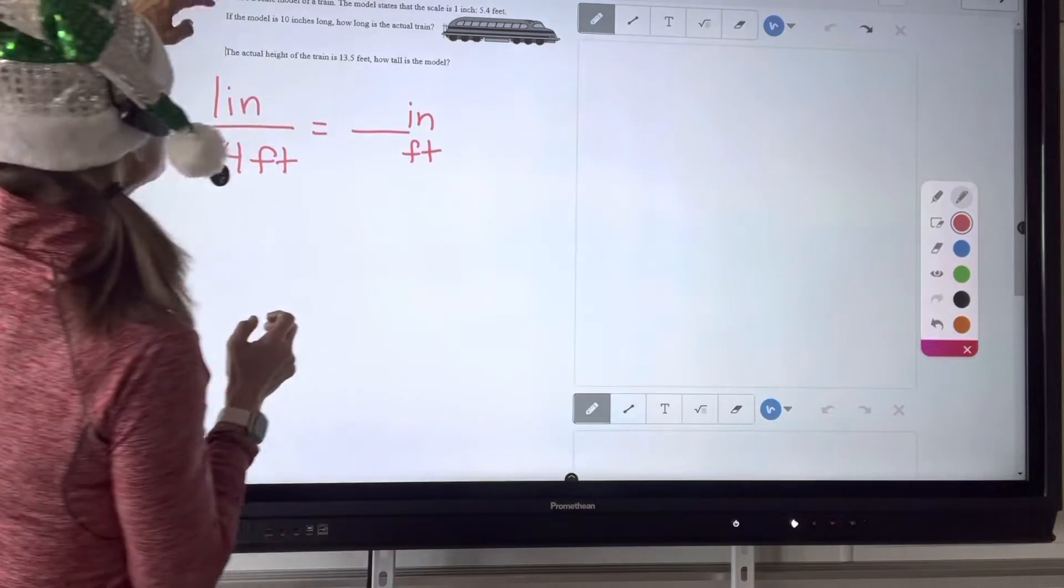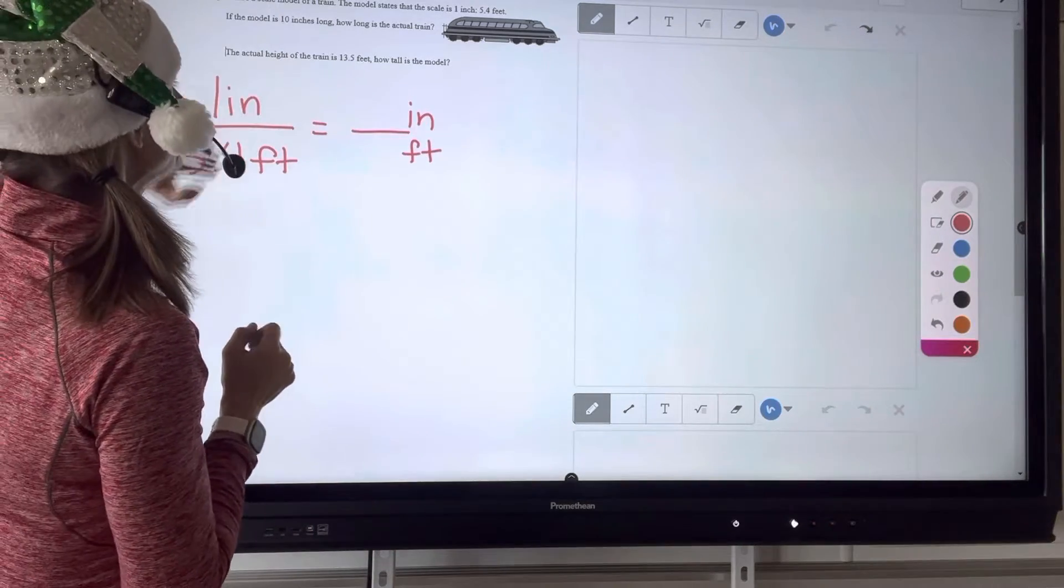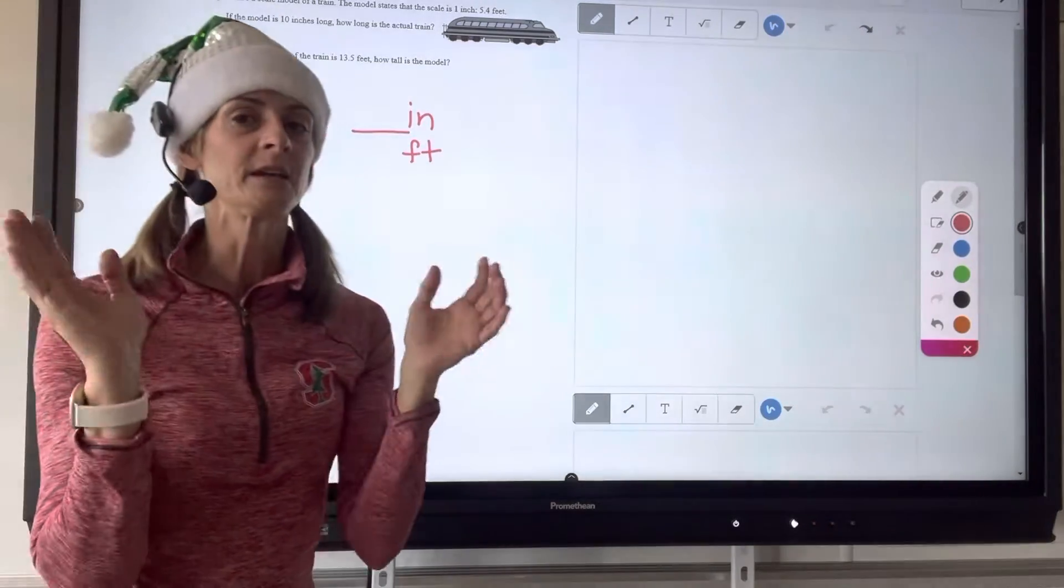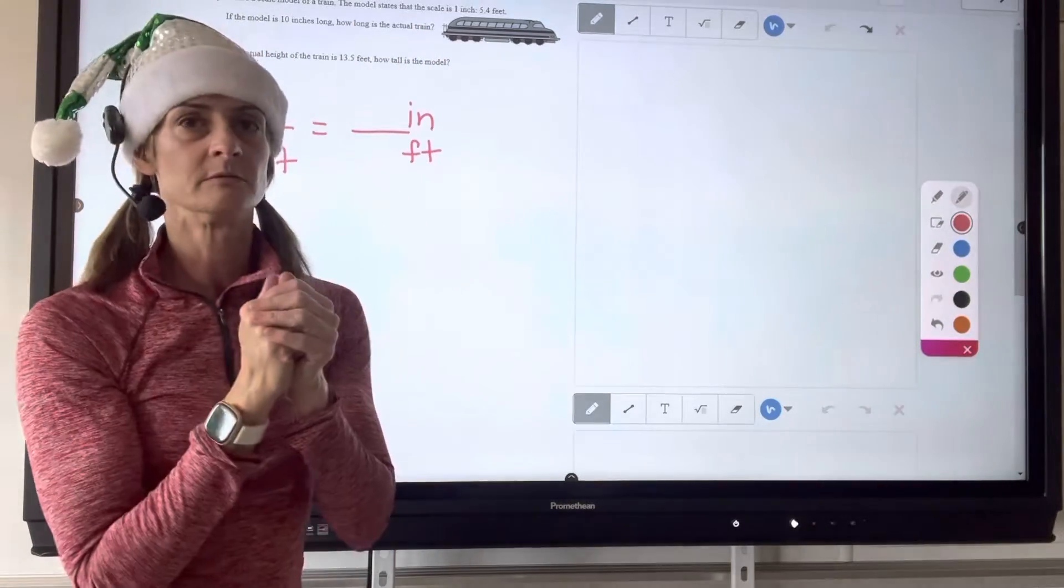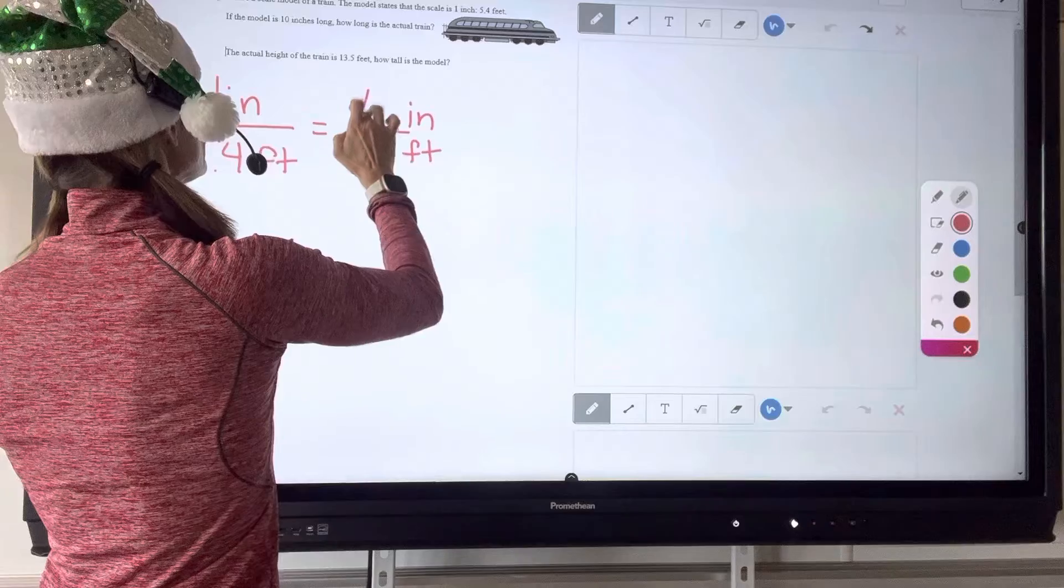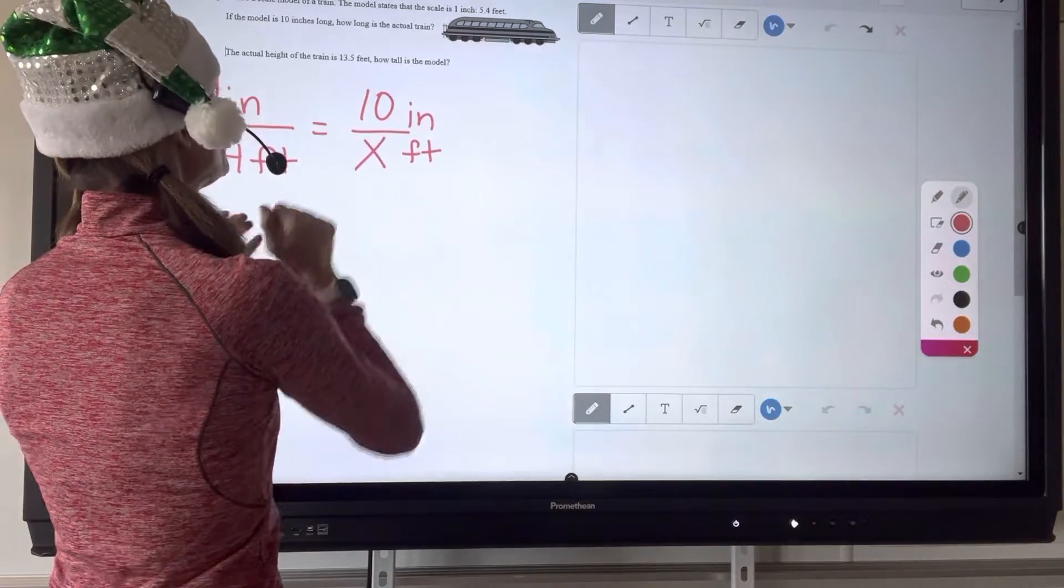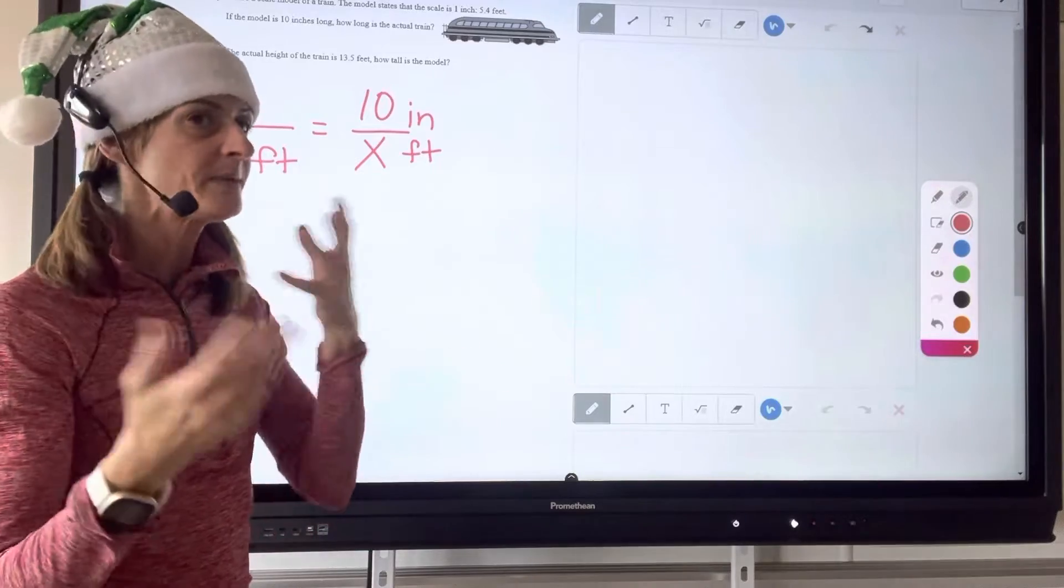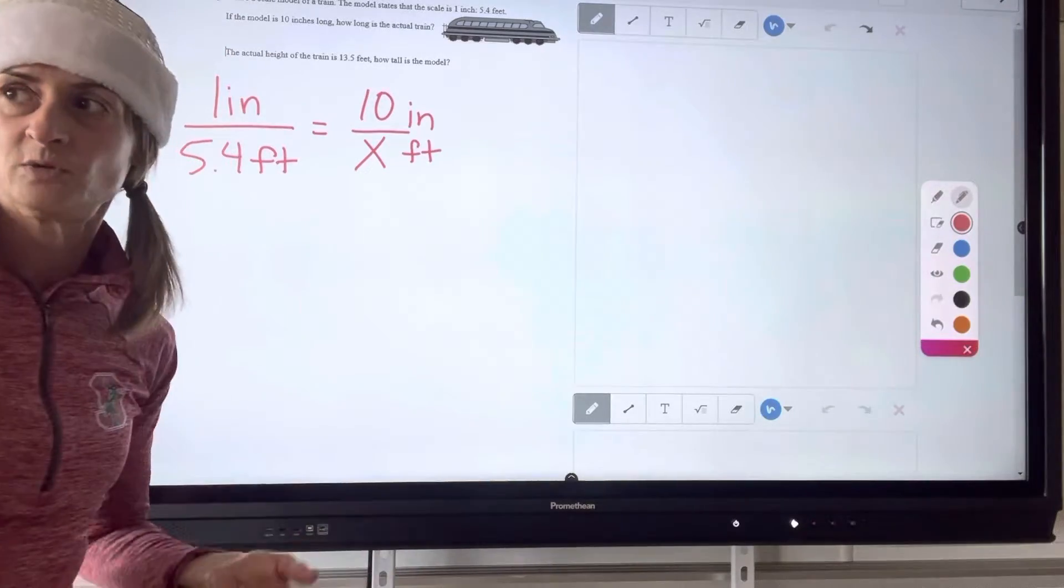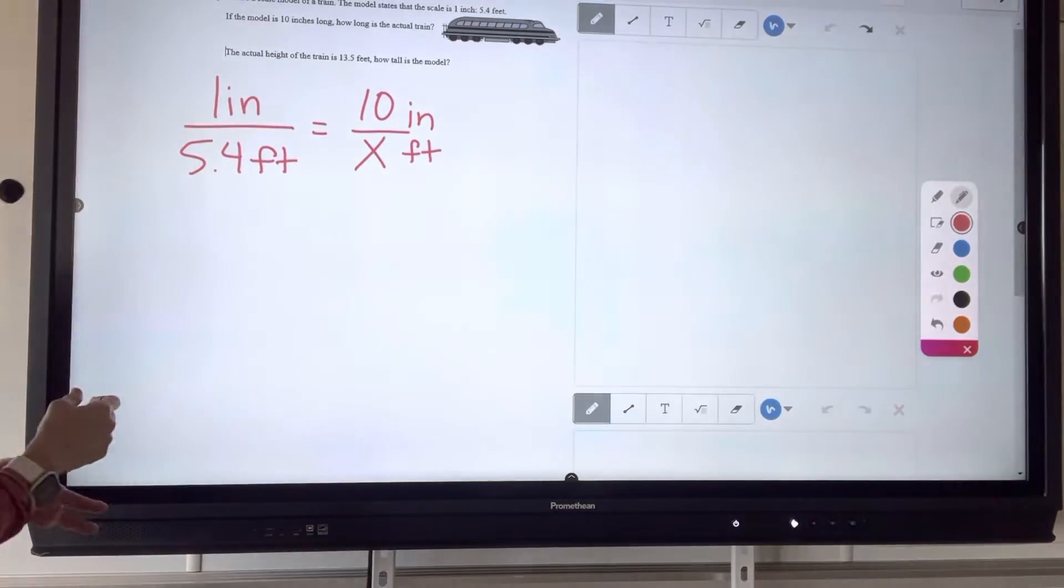Now, the information they gave us, they told us the model is 10 inches long. Where is that 10 going to go? Is it going to go in the numerator or is it going to go in the denominator? And then the other one is the unknown because we don't know the length of the actual train. And these are really basic numbers, but that's what we do when we start with problems.